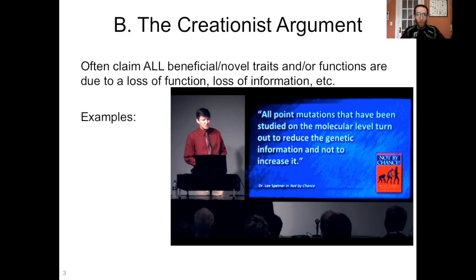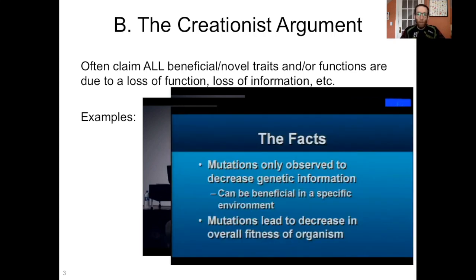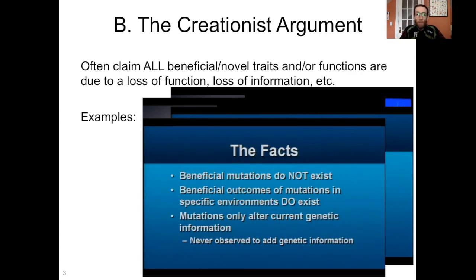I will link to the videos I took these screen captures from in the description so you can find the full videos there if you want. Here's one: 'All point mutations that have been studied on the molecular level turn out to reduce the genetic information and not increase it. Not one mutation has been observed that adds a little information to the genome. Mutations only observed to decrease genetic information can be beneficial in a specific environment. Mutations lead to decrease in overall fitness of organism.' One more, because it's crystal clear: 'Beneficial mutations do not exist. Beneficial outcomes of mutations in specific environments do exist. Mutations only alter current genetic information, never observed to add genetic information.' And I'll note that those last two are from Dr. Georgia Purdom, who has a PhD — she is a geneticist, she knows better, and she's just lying when she says stuff like this.